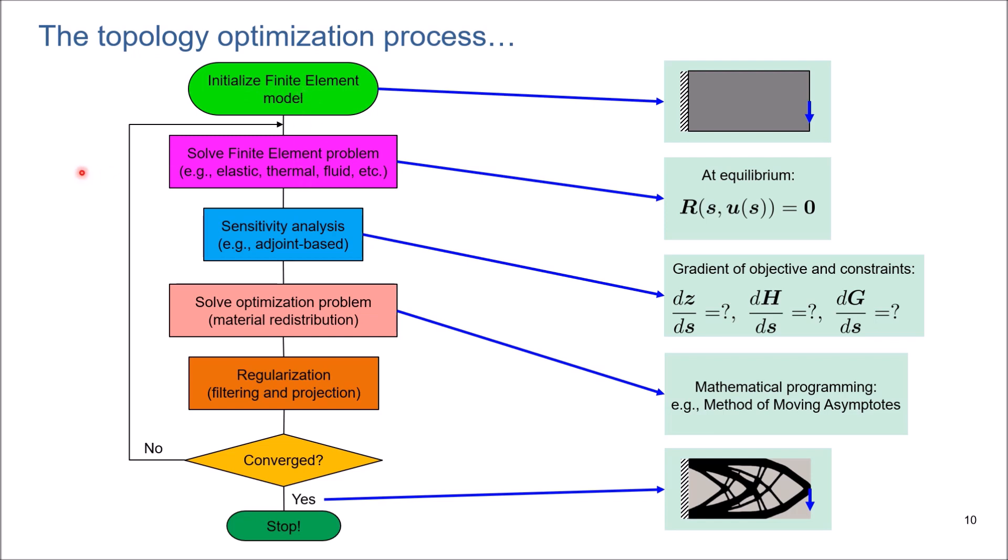Last but not least, I will talk about setting up an optimization problem, implementing the sensitivity analysis, solving the optimization problem, and how to update design variables, post-processing, and convergence criteria in topology optimization.